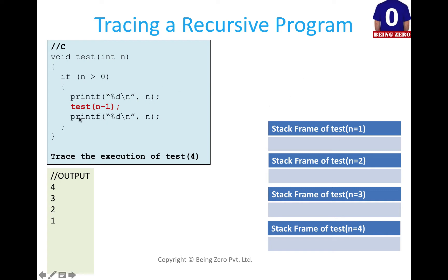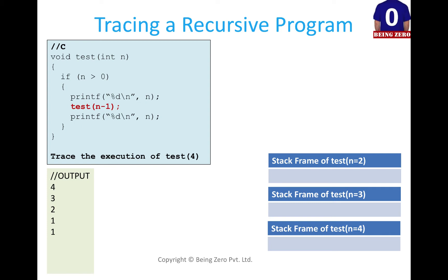Returning to the stack frame where n was 1, we go to the next statement and print the value of n, so 1 is printed again. Then it reaches the last line and the stack frame is cleared from memory. We come back to the call where n was 2, and we again print the value of n, so 2 is printed. Then we reach the last curly bracket and return.